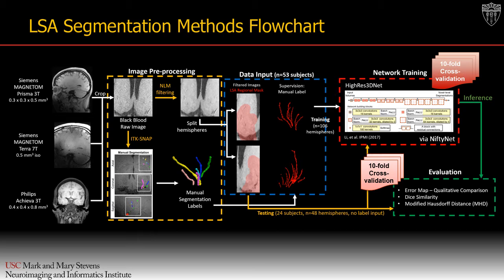For deep learning, the high-res 3D net architecture with 20 layers and residual connections was adapted and trained within the NiftyNet platform on two NVIDIA GeForce GTX 1080 Ti GPUs. Black blood images from 3T and 7T and the LSA regional masks were used as input, and manual segmentation labels served as supervision. The training process was performed with 30,000 iterations with a dice loss function and the Adam optimizer. 10-fold cross-validation was used to address the limited dataset size.